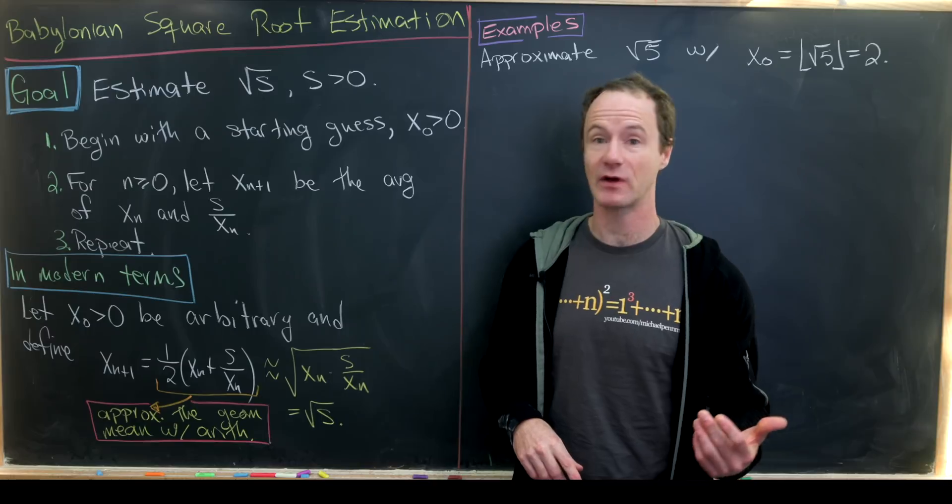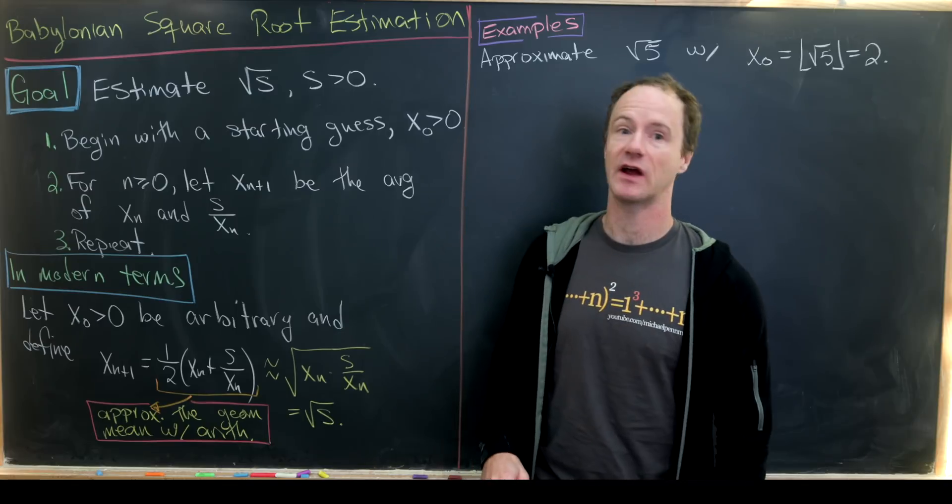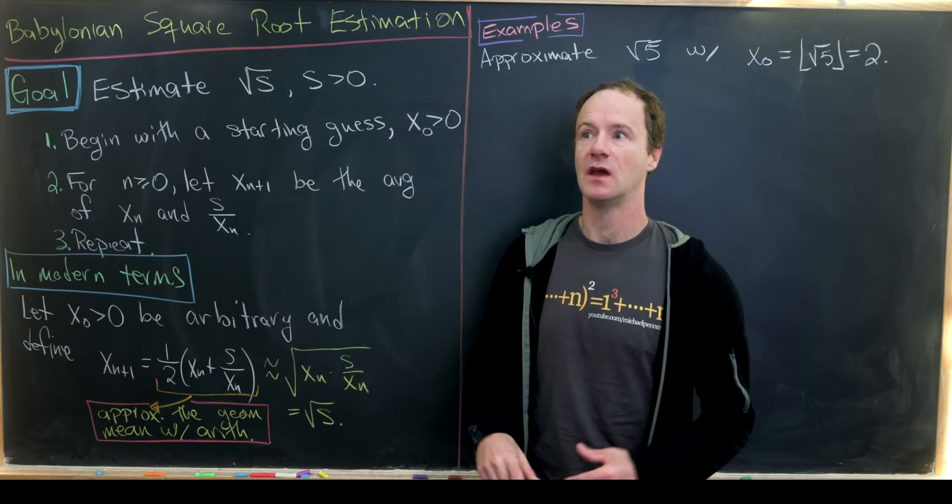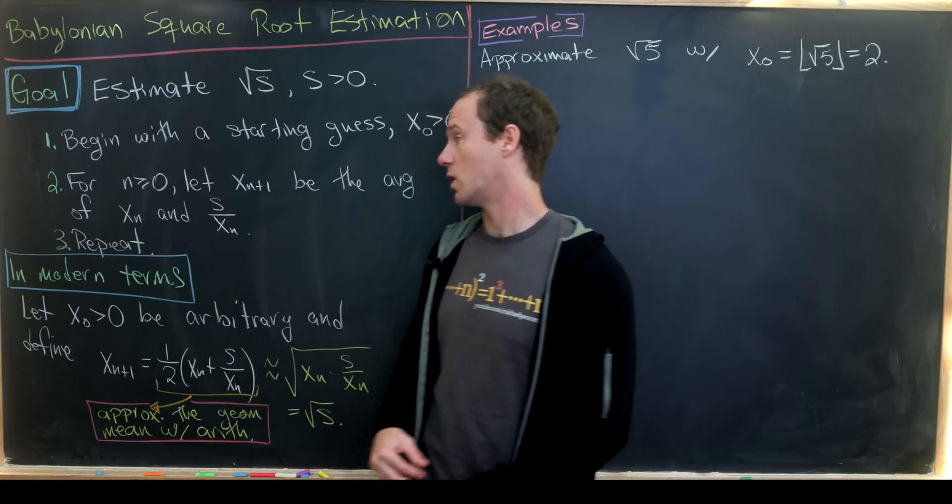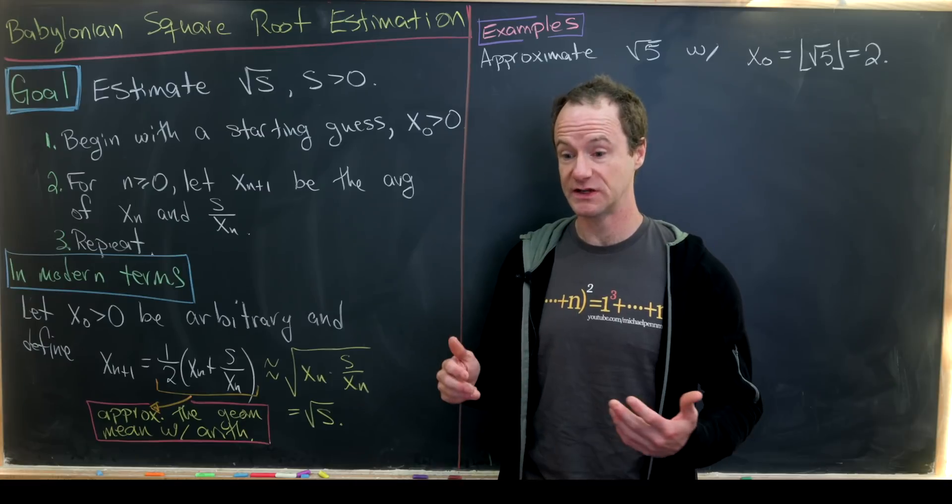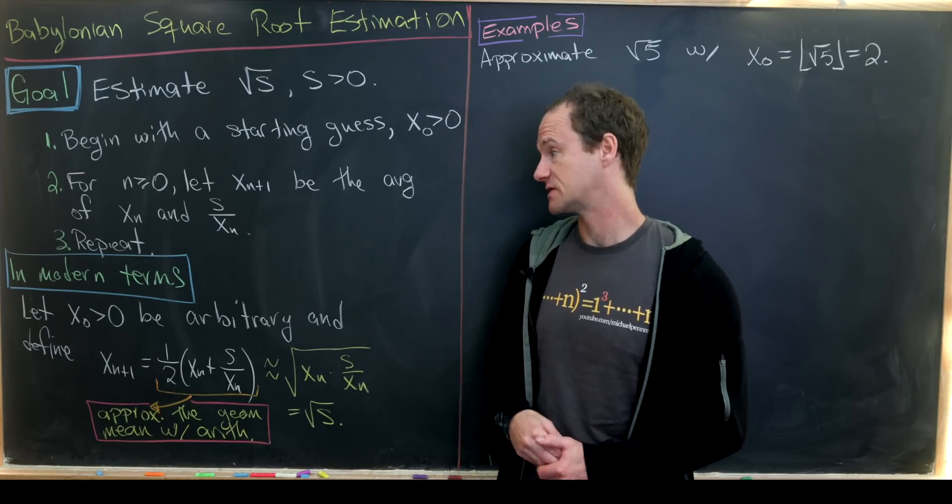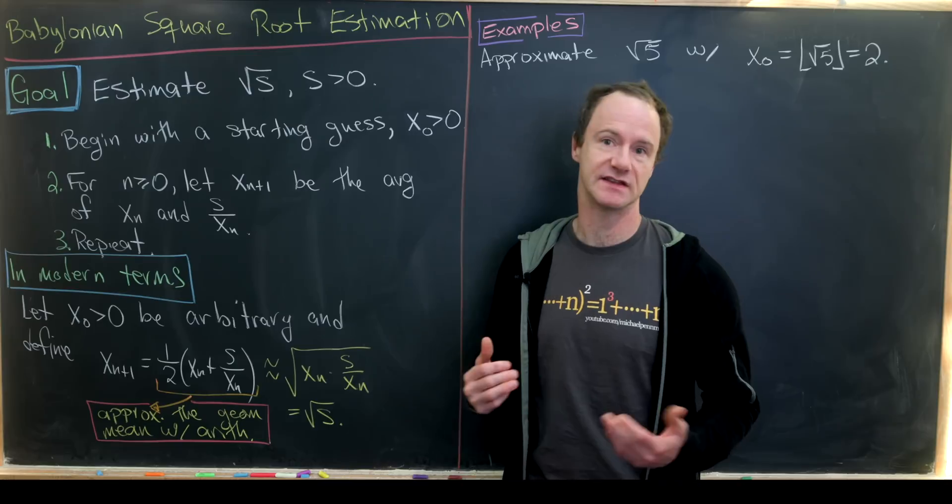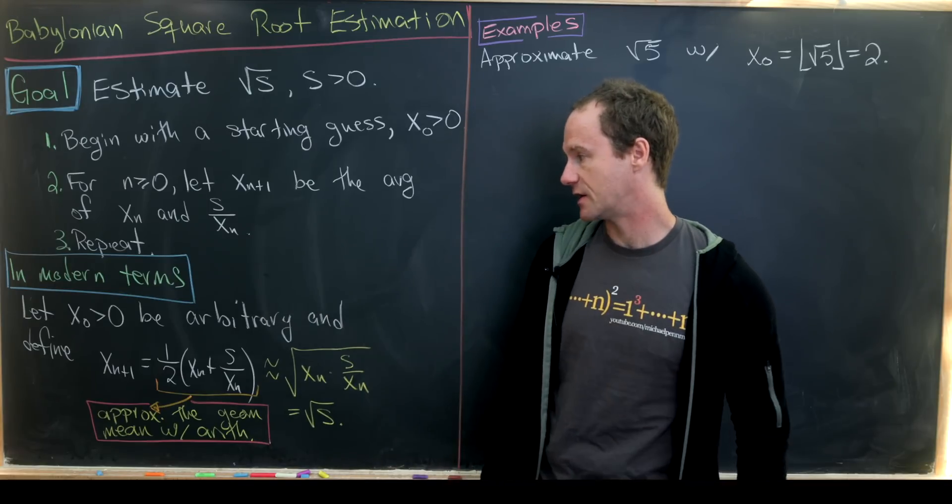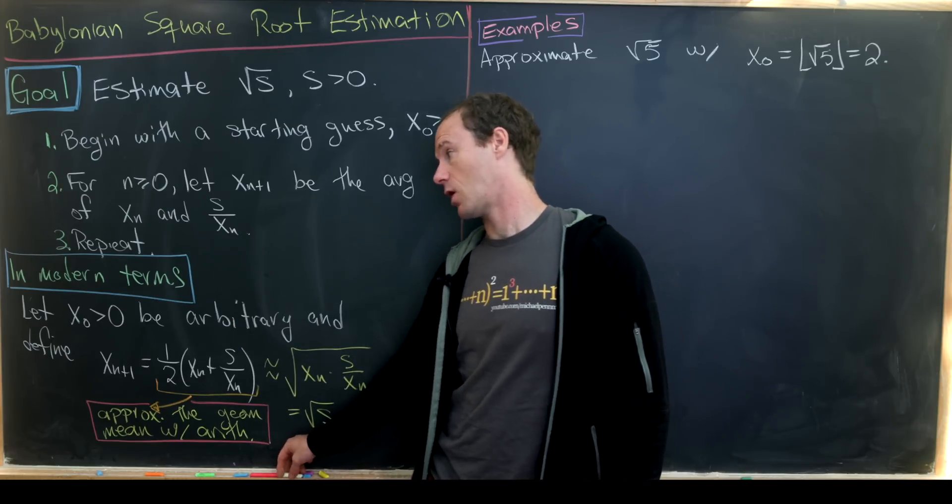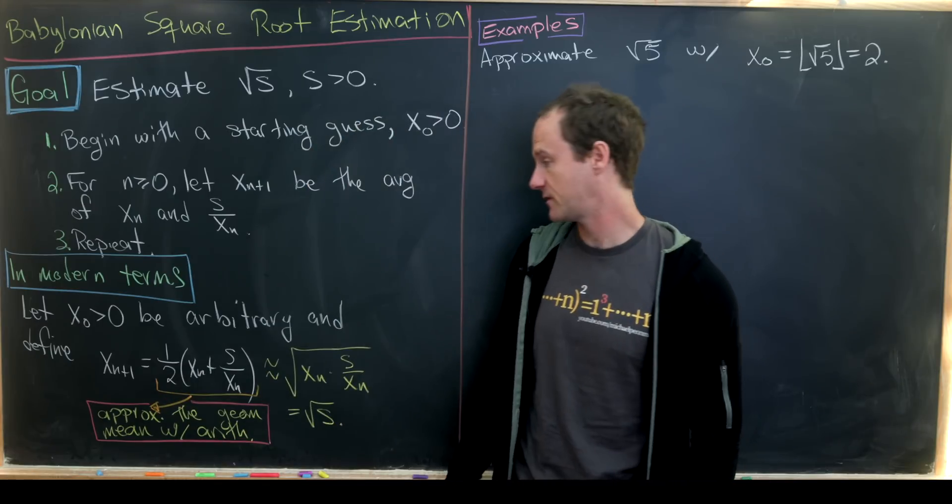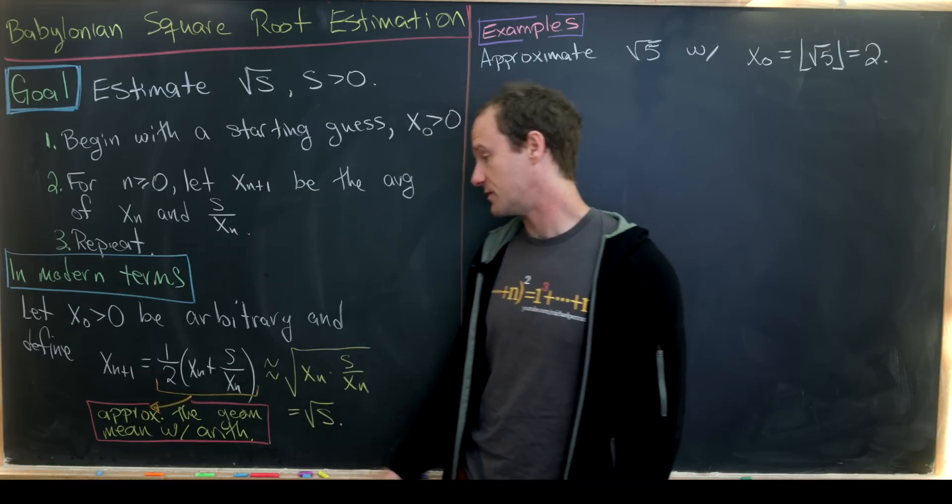The second step is to define xₙ₊₁ as the average or the arithmetic mean of xₙ and s over xₙ. So in particular, x₁ will be the average of x₀ and s over x₀, and then x₂ will be the average of x₁ and s over x₁. And then we repeat as necessary, for as many steps as we would like or until we've reached the desired level of approximation. In modern terms, we would write it as a recursively defined sequence: let x₀ be an arbitrary positive real number, and then for n ≥ 0, we'll define xₙ₊₁ to be ½(xₙ + s/xₙ), the arithmetic mean of those two numbers.